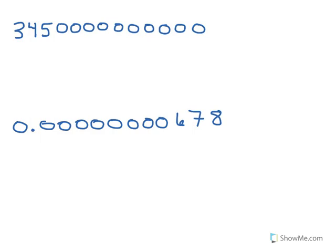We are going to do a quick review of how to write a number using scientific notation. Scientific notation comes in handy when you have either very large numbers like the first one shown or very small numbers like the second one shown. The technique we use is going to be the same for both.